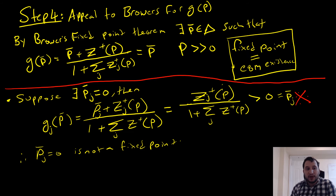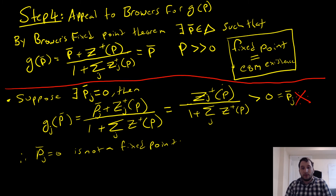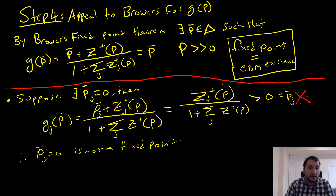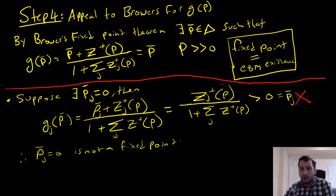Moving forward to our final step, we appeal to Brouwer's Fixed Point Theorem. We invoke it to say that there exists some p on our unit simplex because we have two things: a correspondence which is closed and bounded, as determined by our utility-maximizing consumer, and this mapping lying on there. We can say that such a vector p is going to be a fixed point.